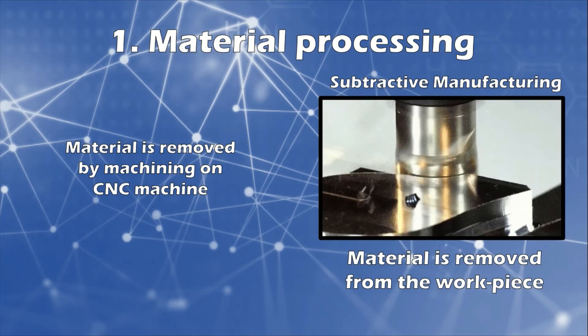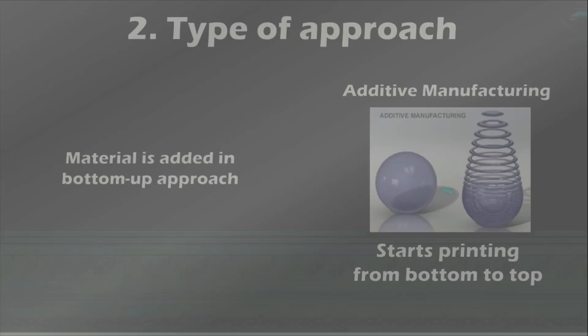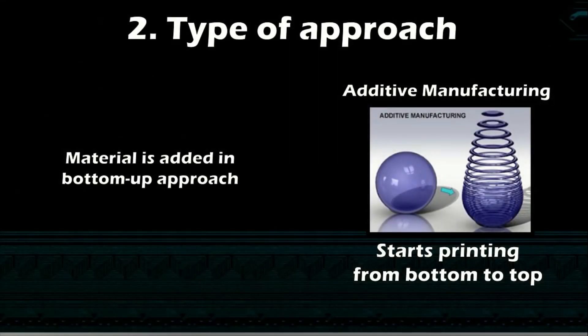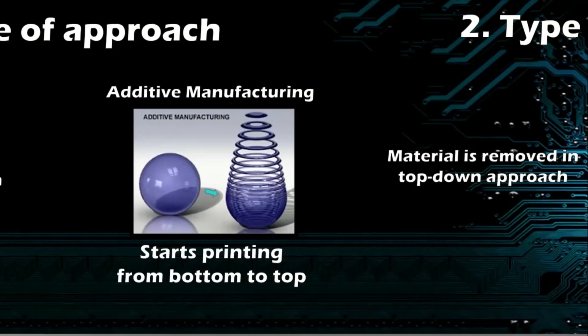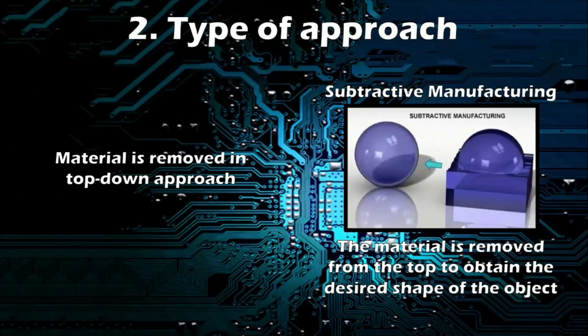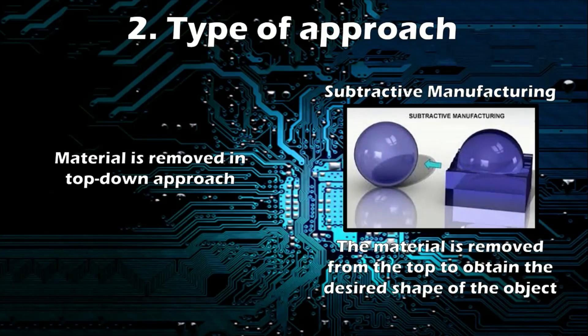Number two: type of approach. Additive manufacturing employs a bottom-up approach — the bottommost layer is printed first, and each consecutive layer is added on top of the previously printed layer until the final object is created. Subtractive manufacturing employs a top-down approach, where material is removed from the top to obtain the desired shape of the object.